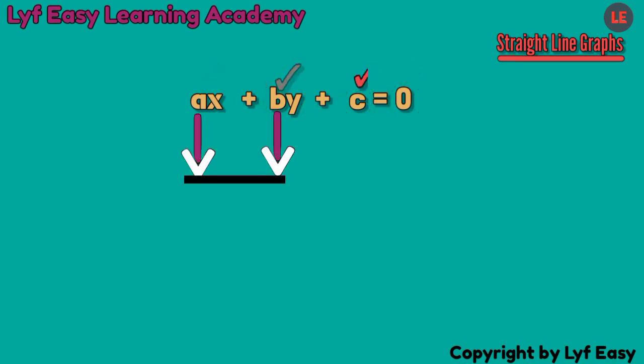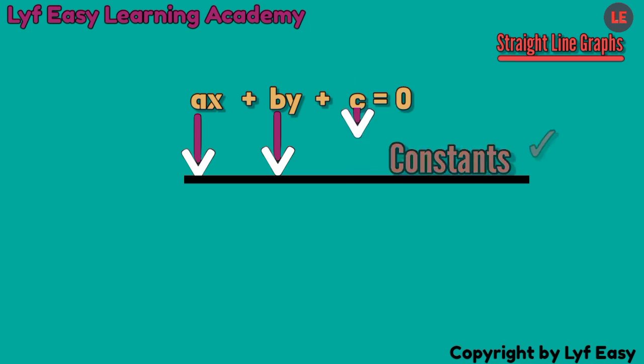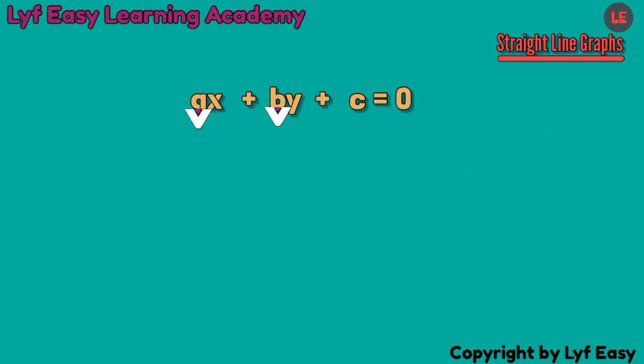These A, B and C are constants, and bear in mind that A and B cannot be both equal to 0 because that will be no longer a graph anymore, it will be something else.